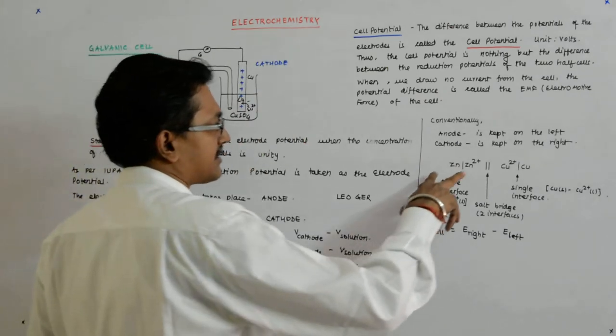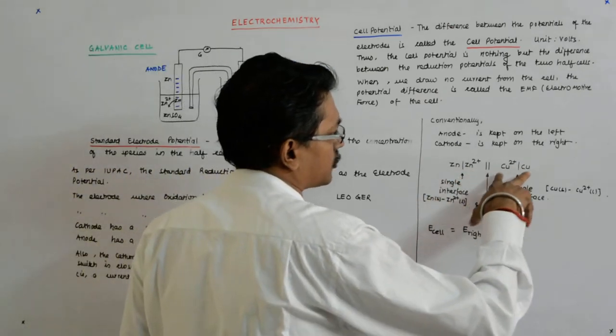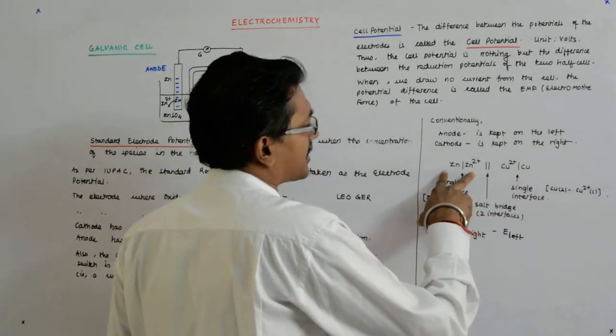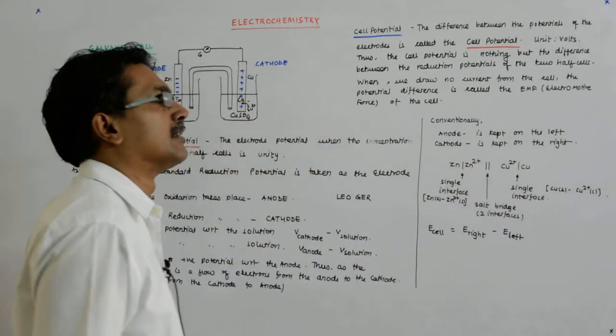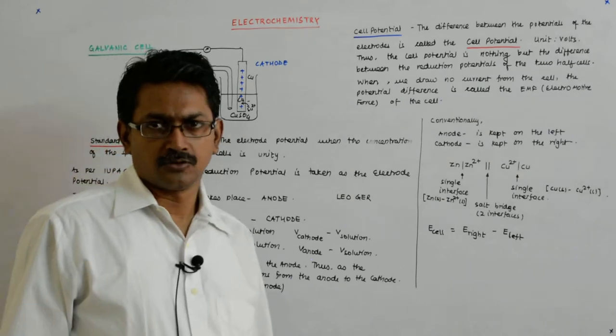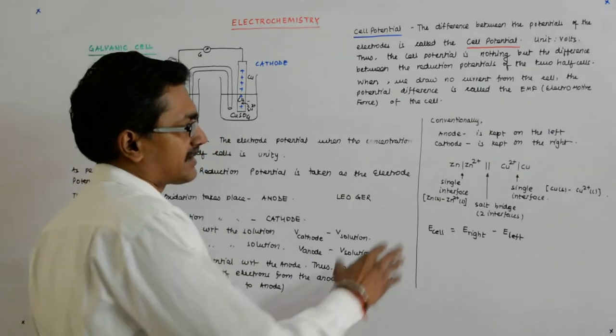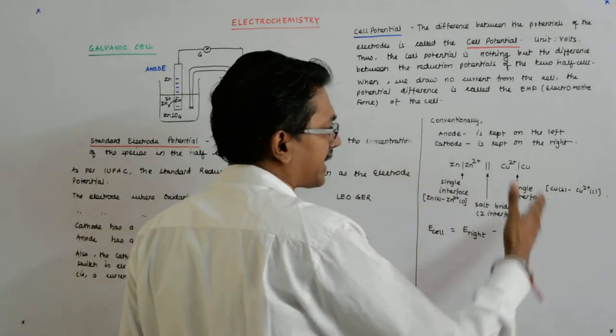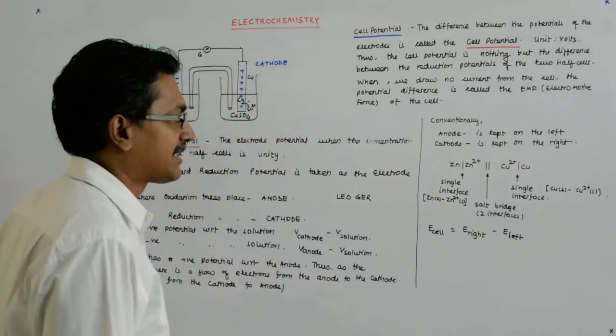Why are we writing it like this: Zn, Zn²⁺, Cu²⁺, Cu? Because we are trying to show the process as well. Whatever process is undergoing in the respective half cells, they are represented here.